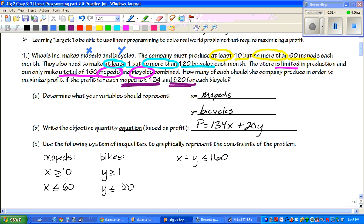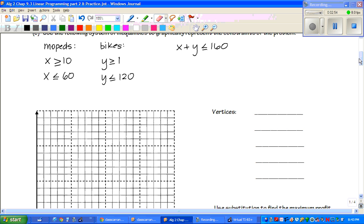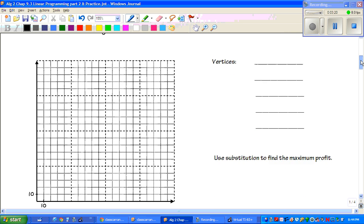And now when we're looking at the second sentence, when we're talking about the bikes, it says they also need to make at least one, but no more than 120. So that's where all of that comes from. Now, before we start graphing all of this stuff, let's make sure all of them are in slope-intercept form. So we have to solve for Y. Subtract the X to the other side, and you get Y is less than or equal to negative X plus 160.